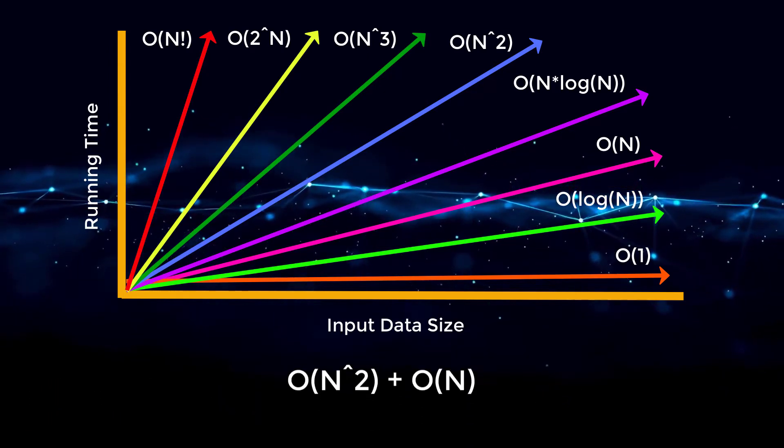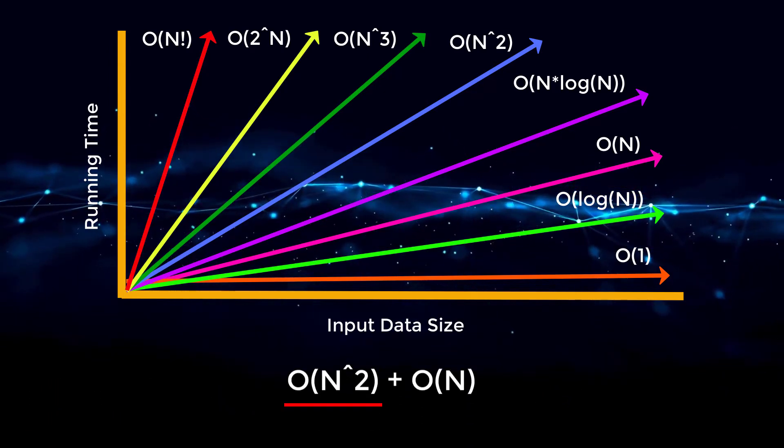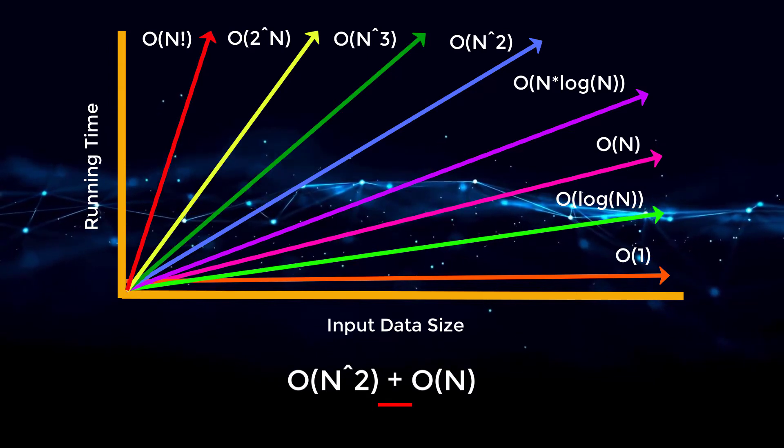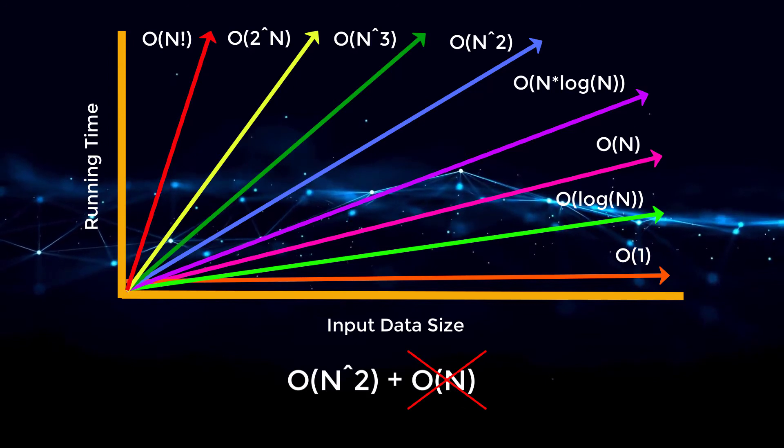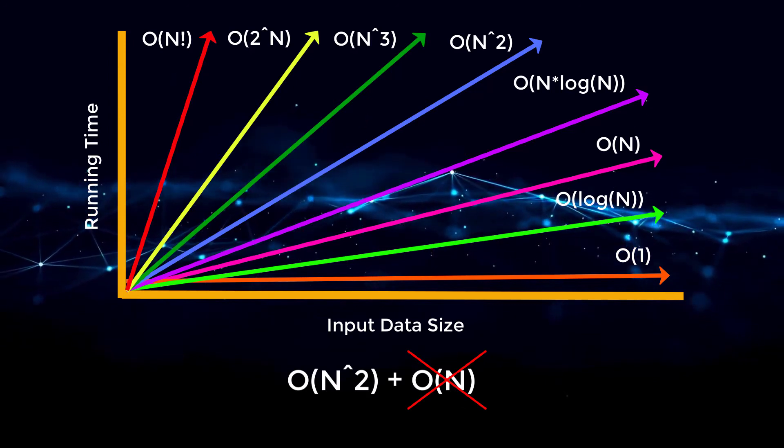So for example, if I have an algorithm that ran in Big O of n squared plus Big O of n, we would just drop the Big O of n because Big O of n squared is the dominant term in this scenario.